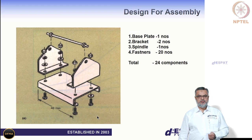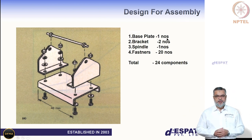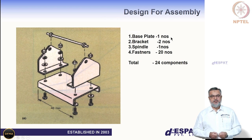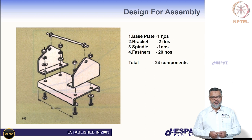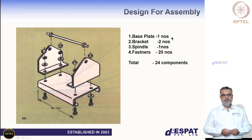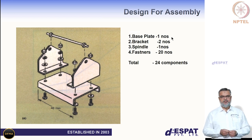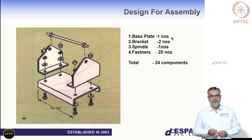DFMA has two modules that look at product design. The first is called Design for Assembly, and the DFA software also includes a Design for Manufacture module. To highlight the Design for Assembly module, I am showcasing a simple sub-assembly here. If you were to analyze this for product simplification, several ideas could emerge. In DFA, we have a particular way of analyzing: we look at what the product or sub-assembly looks like when fully assembled and what each component is doing.